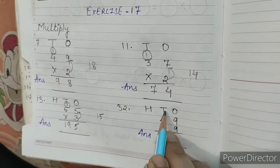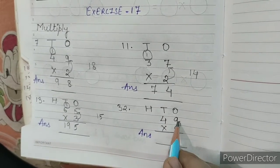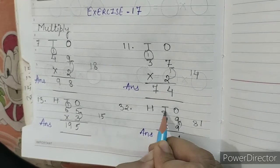Question number 32, ones, tens, hundreds. 49 into 9. 9, 9s are 81. 8, 1, 81. We will write 1. Carry over 8.